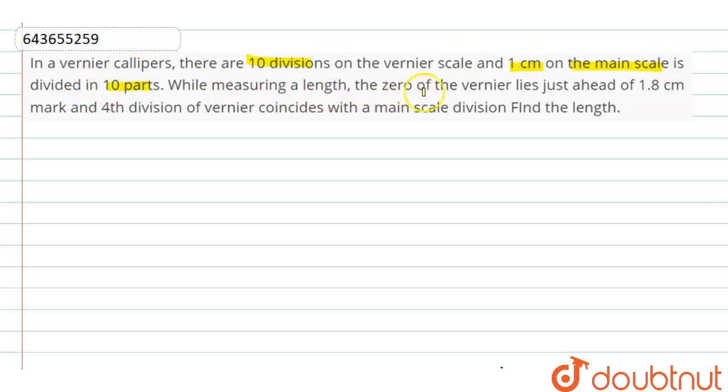While measuring a length, the zero of the Vernier lies just ahead of 1.8 centimeter mark and the fourth division of Vernier coincides with main scale division. Find the length.